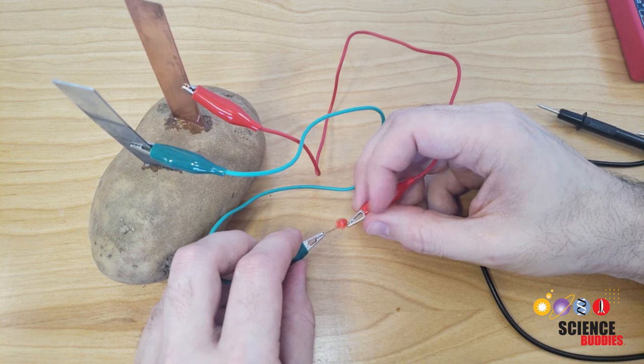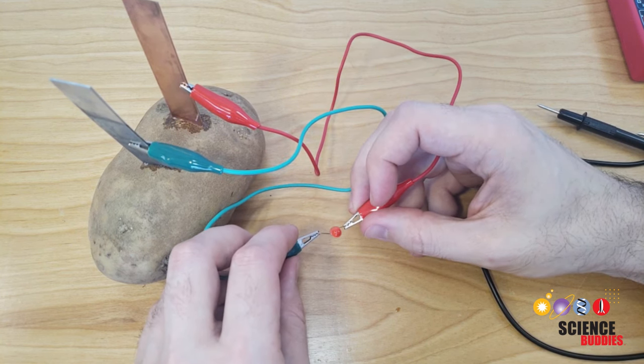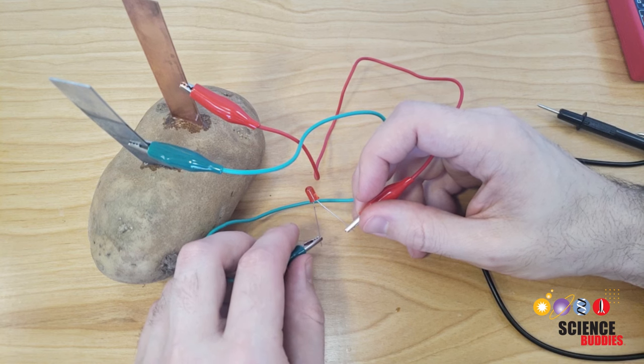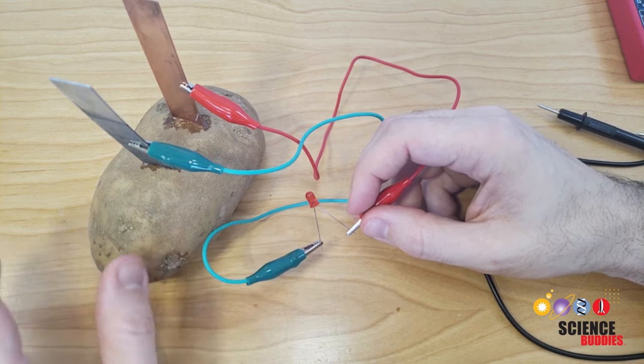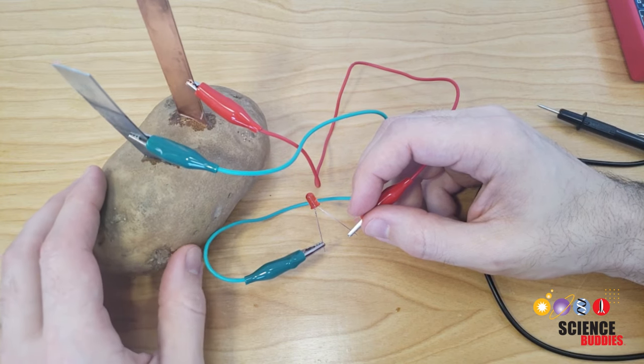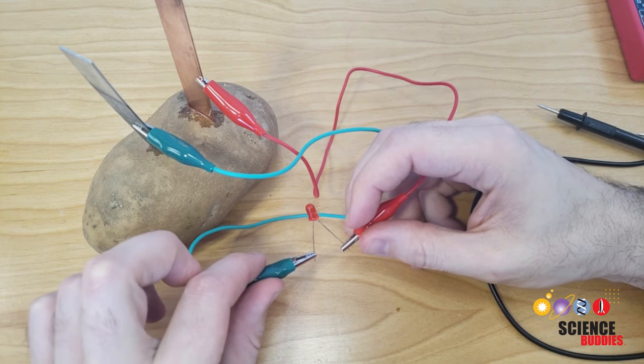And when you do that, ideally if it was working, you would expect your LED to light up. But we noticed that my LED does not appear to be lighting up at all. So what we are going to explore next is connecting multiple cells in series to make a battery with a higher voltage and see if that will light up our LED.